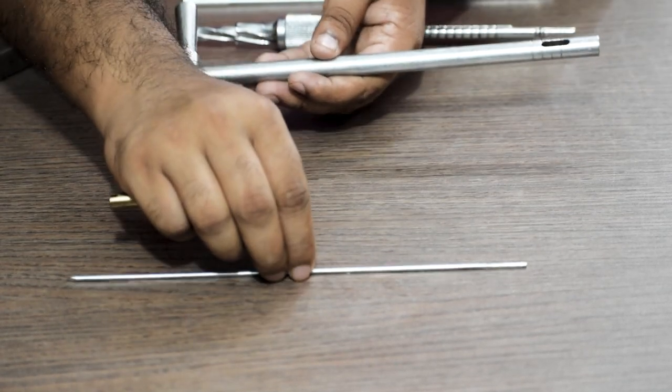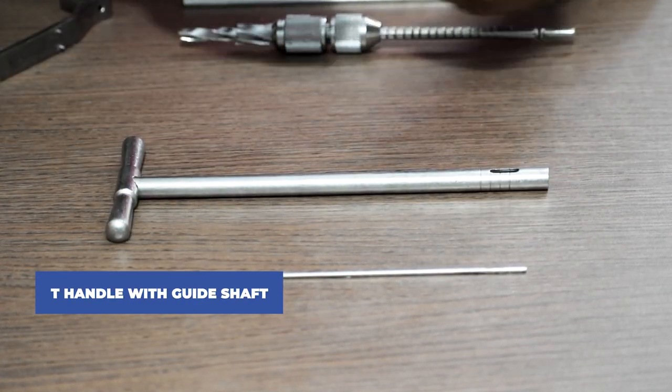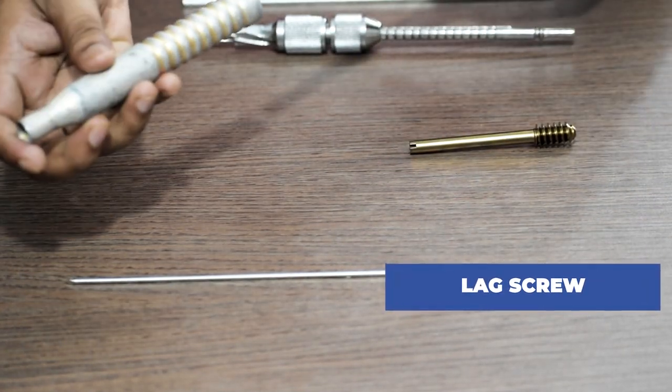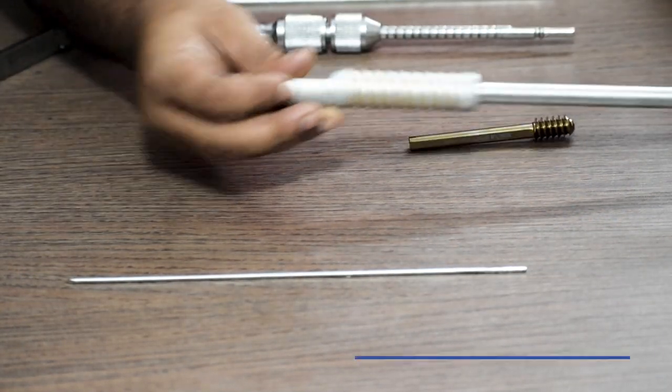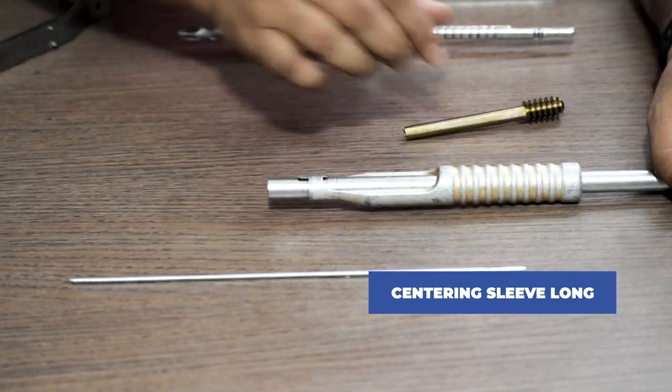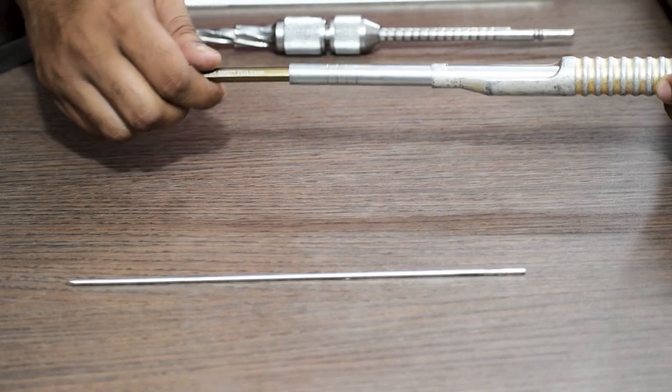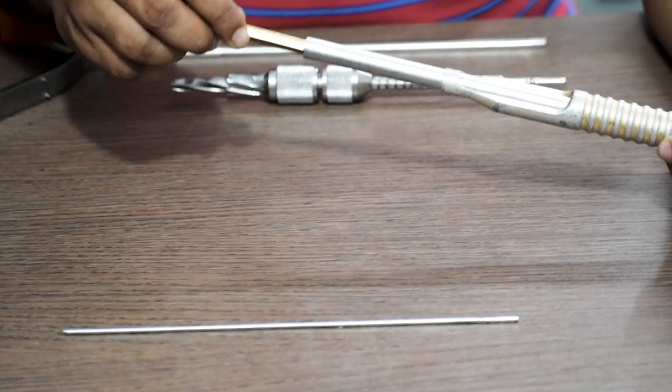Once the tapping is done, we will take a T-handle with guide shaft and a lag screw. First we attach the long centering sleeve in the T-handle, and then connect the screw with the T-handle.